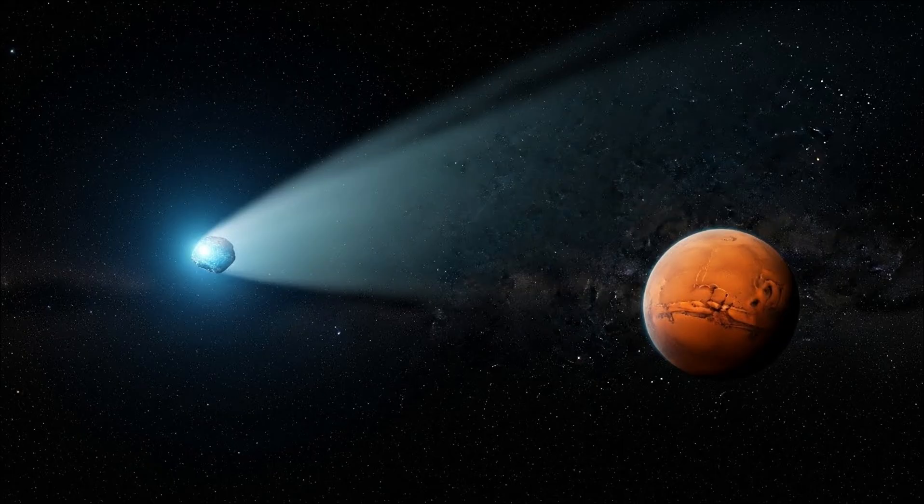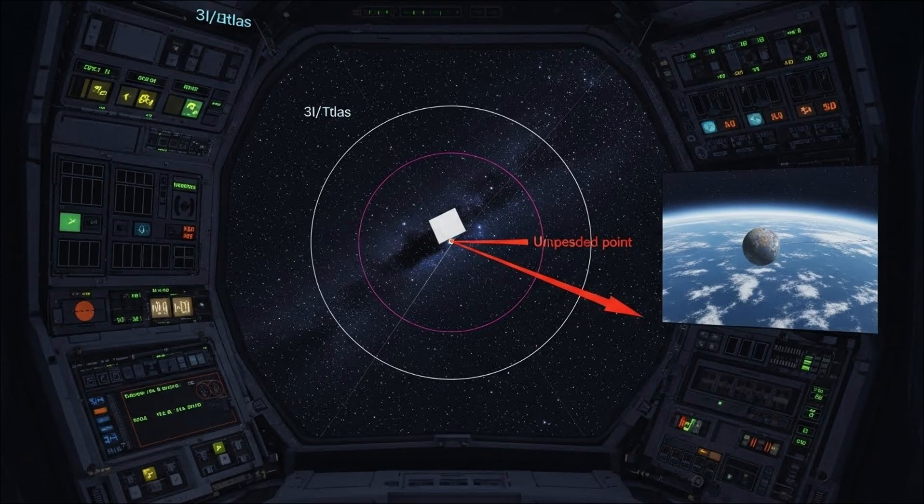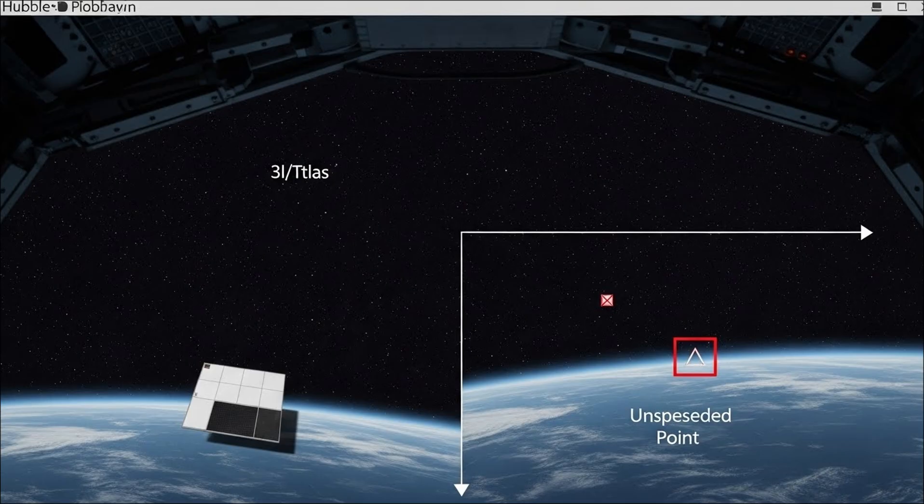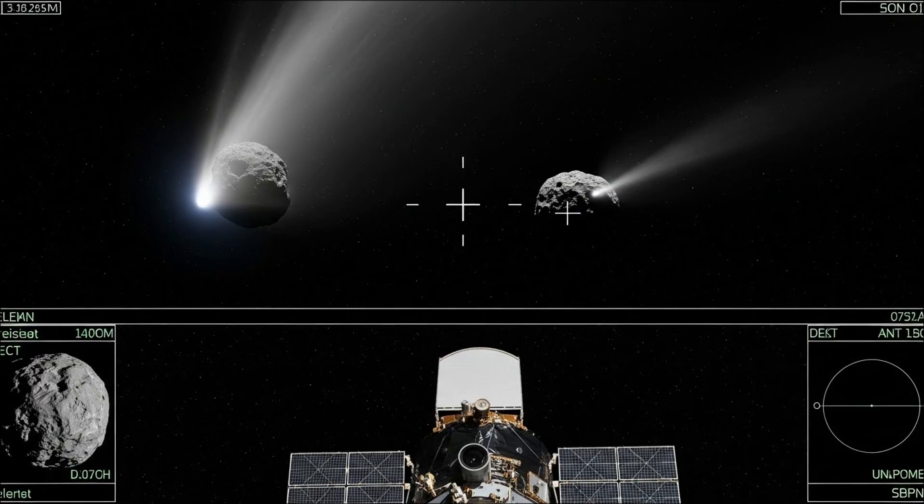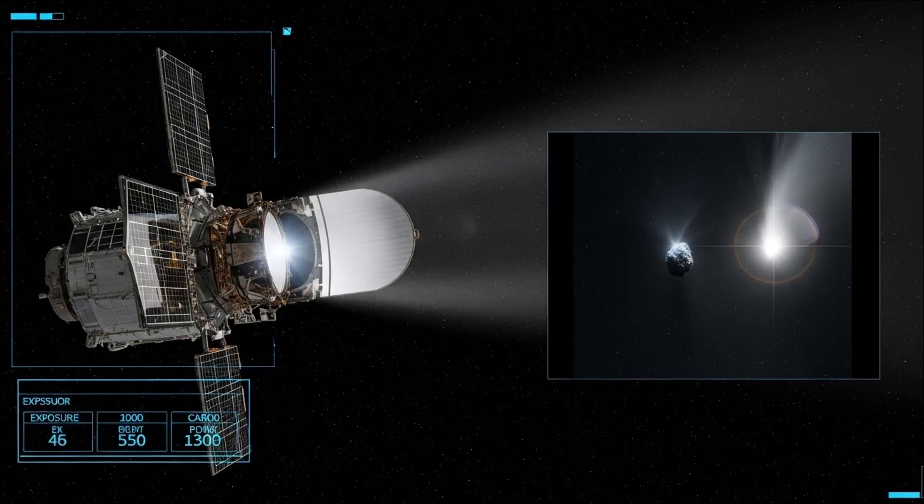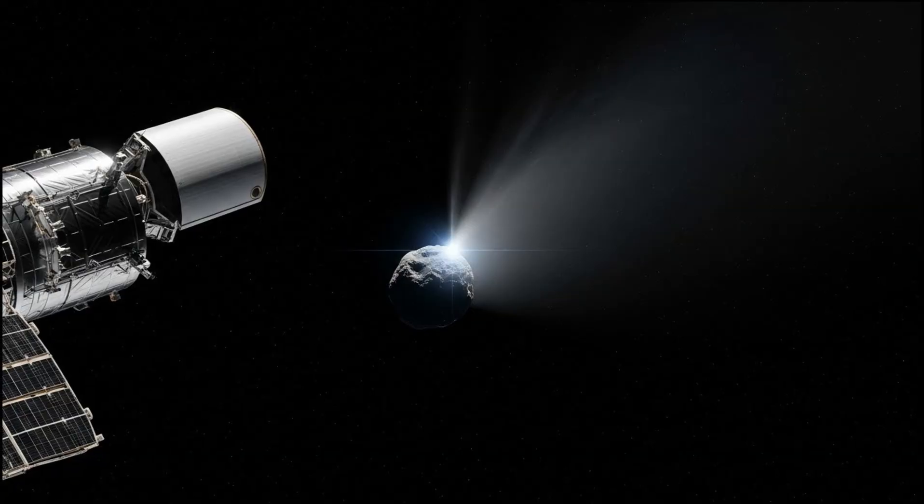But in April 2021, during a routine follow-up observation as 3I/Atlas continued its outbound journey past the orbit of Mars, the Hubble Space Telescope captured something else. Hubble's Wide Field Camera 3 was tracking 3I/Atlas as part of a long-term study on outgassing behavior—the way comets release gas and dust as they're heated by the sun, even at great distances. The observation sequence was standard. Hubble locked onto the comet's nucleus. Multiple exposures spaced minutes apart, designed to capture any changes in brightness, tail morphology, or fragmentation events.